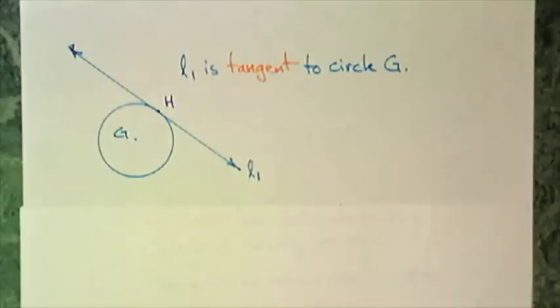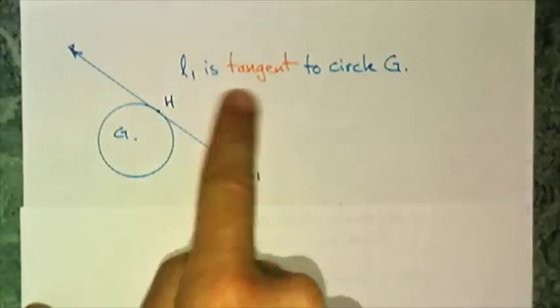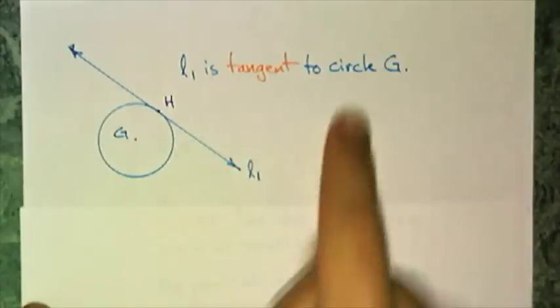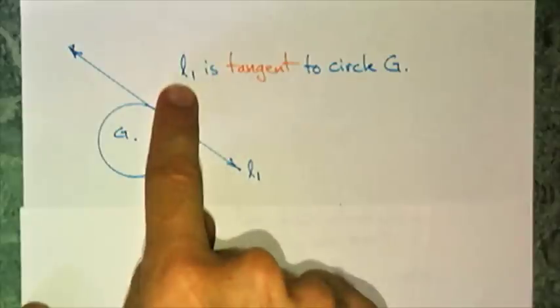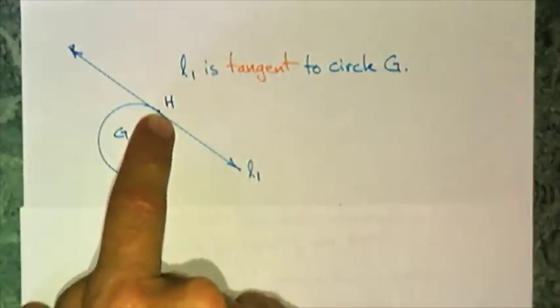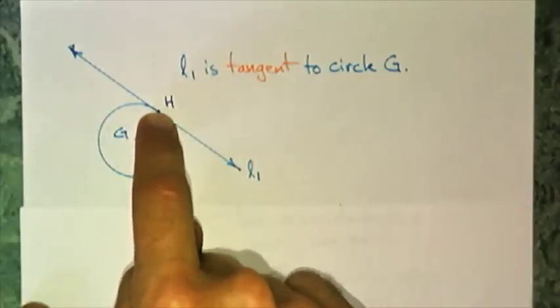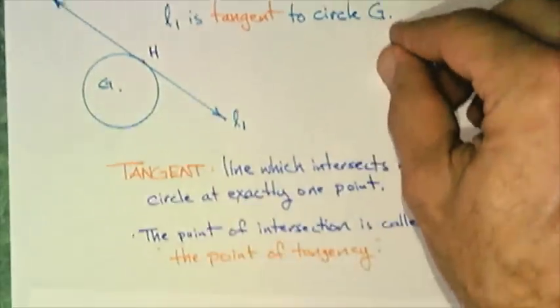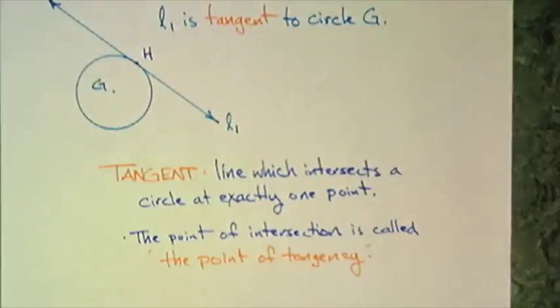Our next word is tangent and I have a figure here and a statement. Line L1 is tangent to circle G. A couple things that I'm pointing out. Circle G, I'm telling you the center. I'm telling you L1 is tangent, which means that it intersects at one point. It doesn't go through the circles but it does hit the circumference at one point. And that's exactly what tangent means. A line which intersects a circle at exactly one point. The point of intersection is called the point of tangency.